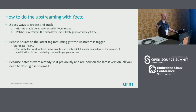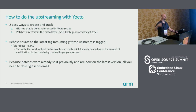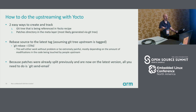Alternatively, Yocto has a patches directory inside the meta layer. You could have that full of 400 patches that you would have to individually keep track of in your recipe. It's not that hard because it's an individual line each, but it's not particularly pretty either. I think number one is the better way to do it.